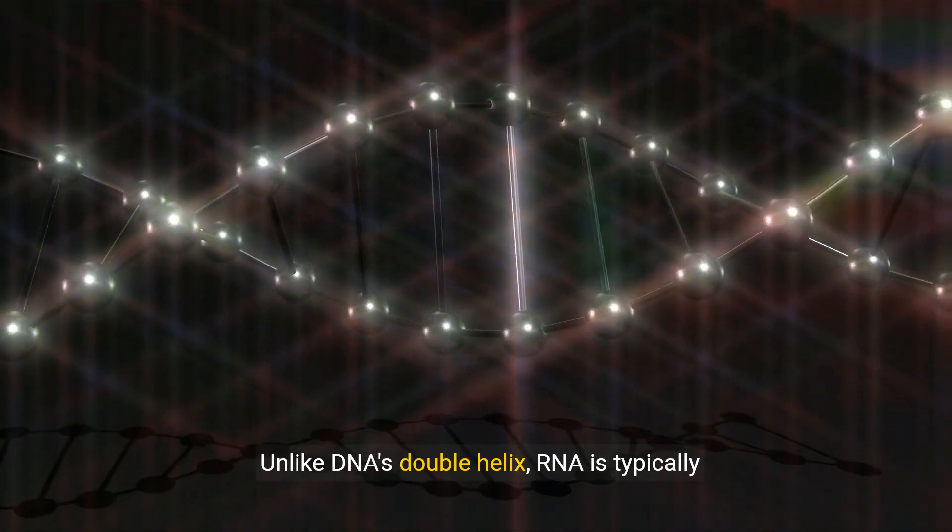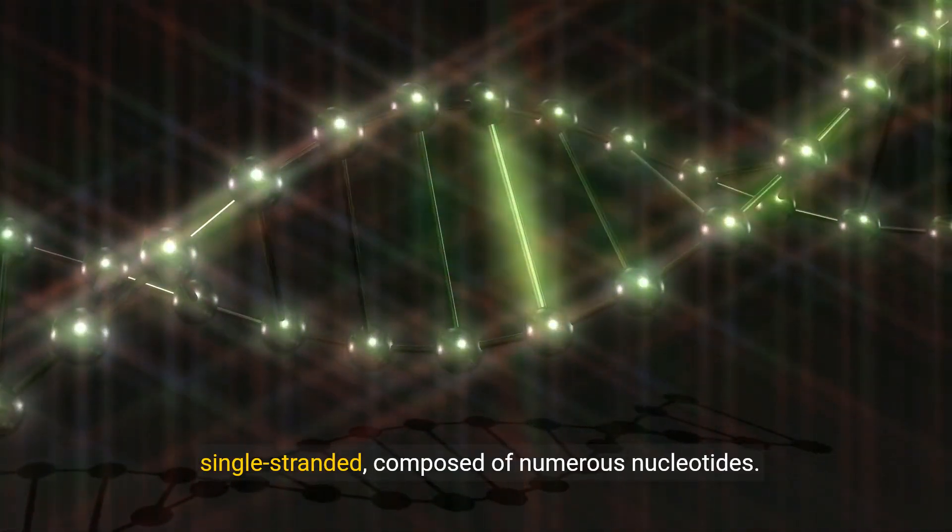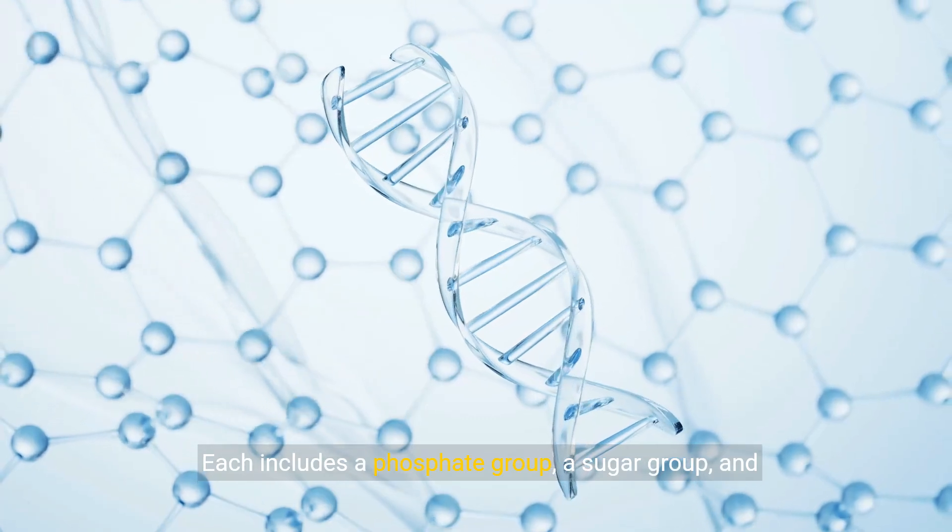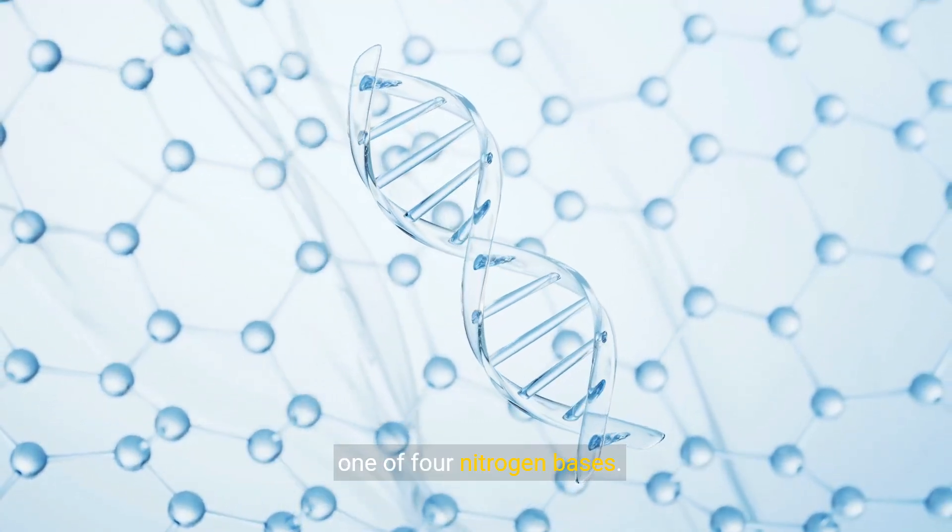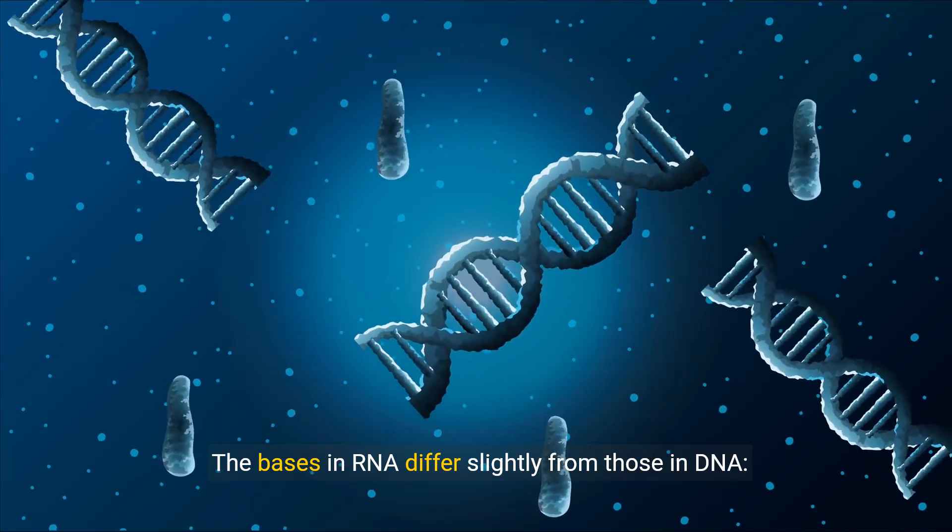Unlike DNA's double helix, RNA is typically single-stranded, composed of numerous nucleotides. Each includes a phosphate group, a sugar group, and one of four nitrogen bases.